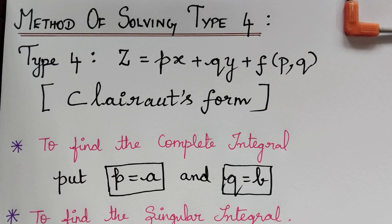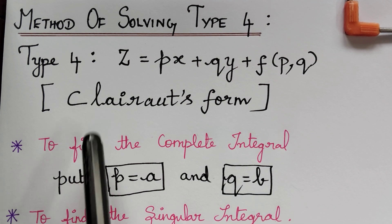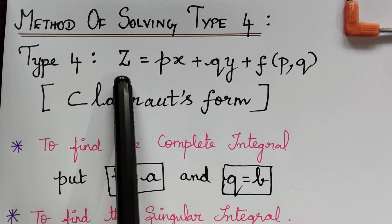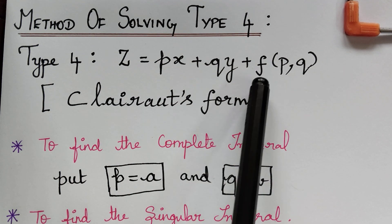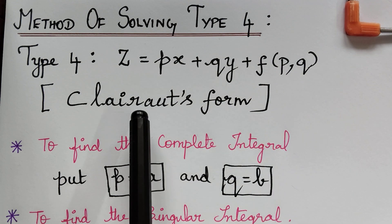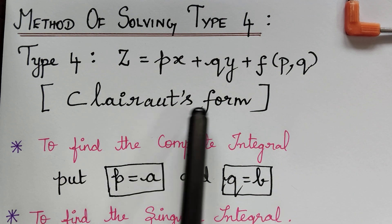Dear students, under the topic nonlinear partial differential equations, we are solving problems under Type 4. Here we have the method of solving Type 4. The equation of the form z = px + qy + f(p, q), that is, a function of p and q, is known as Clairaut's form.